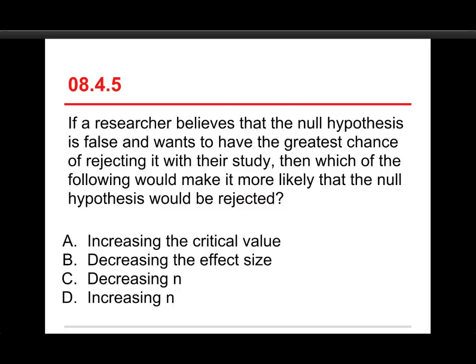Okay, last question. If a researcher believes that the null hypothesis is false and wants to have the greatest chance of rejecting it with their study, then which of the following would make it more likely that the null hypothesis would be rejected? So assuming that there really is a difference, what's going to make it most likely to find it? Increasing the critical value, decreasing the effect size, decreasing n, or increasing n? The answer is increasing n. Changing the critical values, if you decrease the critical values, that would give you more statistical power, greater chance of rejecting the hypothesis, but at a direct trade-off with increasing the risk of false positives - excuse me, false negatives, or type 2 errors. And that's not good.